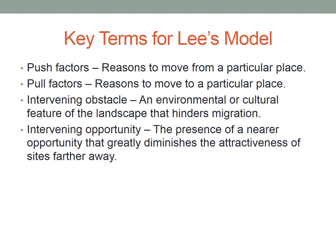We start out with push factors. Push factors are reasons to move from a particular location — these are the negative circumstances associated with a particular spot that are driving people to leave, pushing people to emigrate, to exit a particular location. Whereas pull factors are those reasons to move to a particular place — they're pulling people in, the positive circumstances that draw people to immigrate to a particular location.